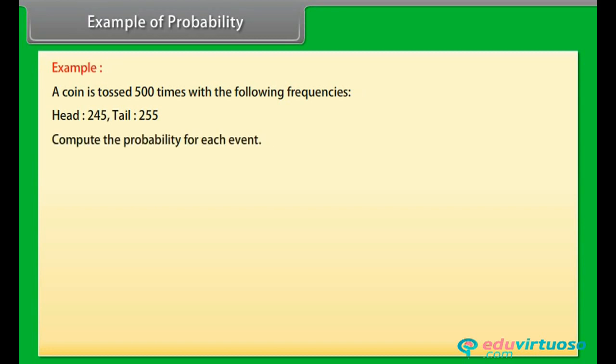Example of probability. Example: A coin is tossed 500 times with the following frequencies - Head: 245, Tail: 255. Compute the probability for each event.